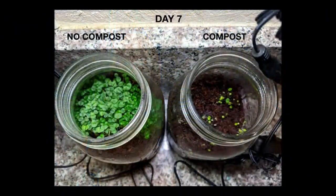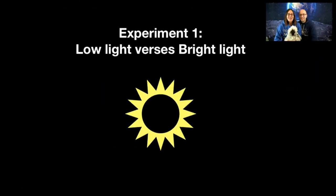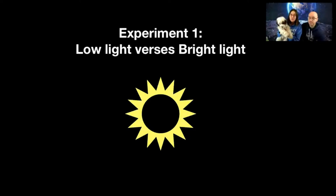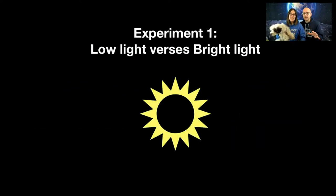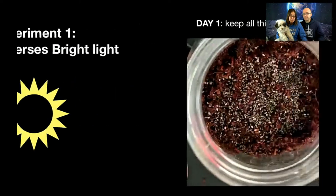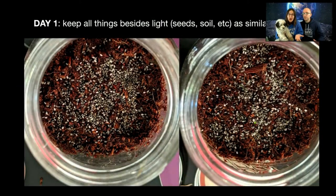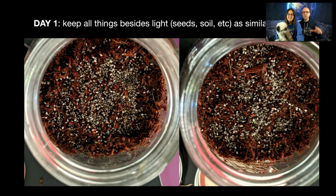Let's pull up our slideshow and look at bright light versus low light. When you do an experiment, you have to have a variable that changes, and you want to keep everything else as the same as possible. What's the difference between an experiment and a demo? In a demonstration, you're making something happen but you don't have a variable that changes. To have an experiment, you have to do it at least twice — you need a control where everything is normal, and then the variable condition where you change it.